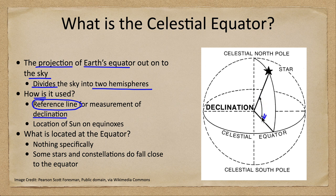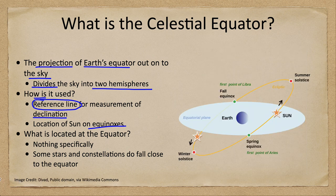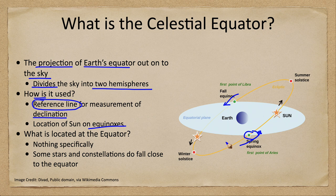The celestial equator is also the location of the sun on the two equinoxes — the two days with equal day and equal night. Here we can see where the ecliptic, which is the path of the sun, intersects the celestial equator. The spring equinox is when the sun is going up across the equator, and the fall equinox is when it is going down, so it intersects exactly two times.